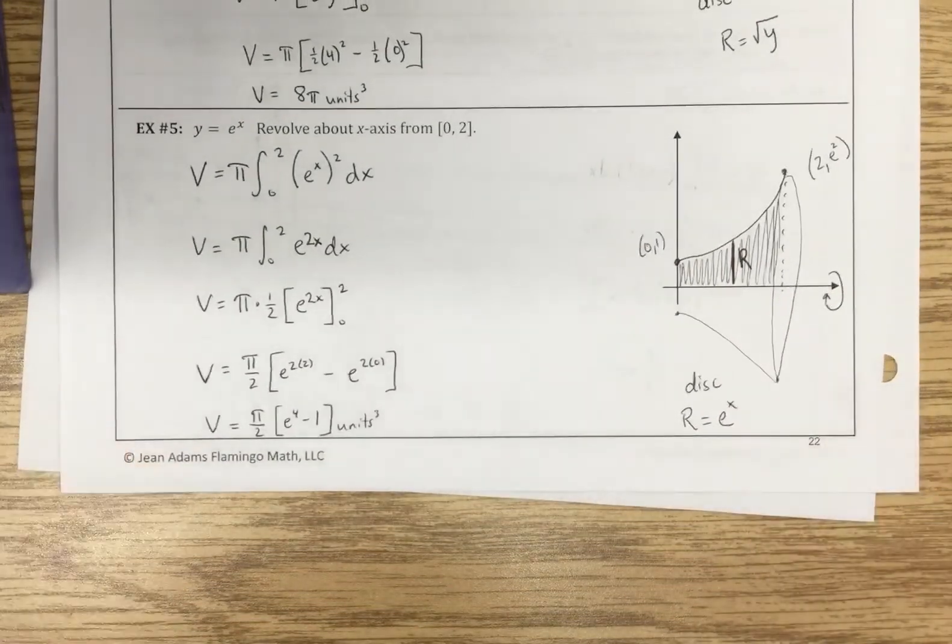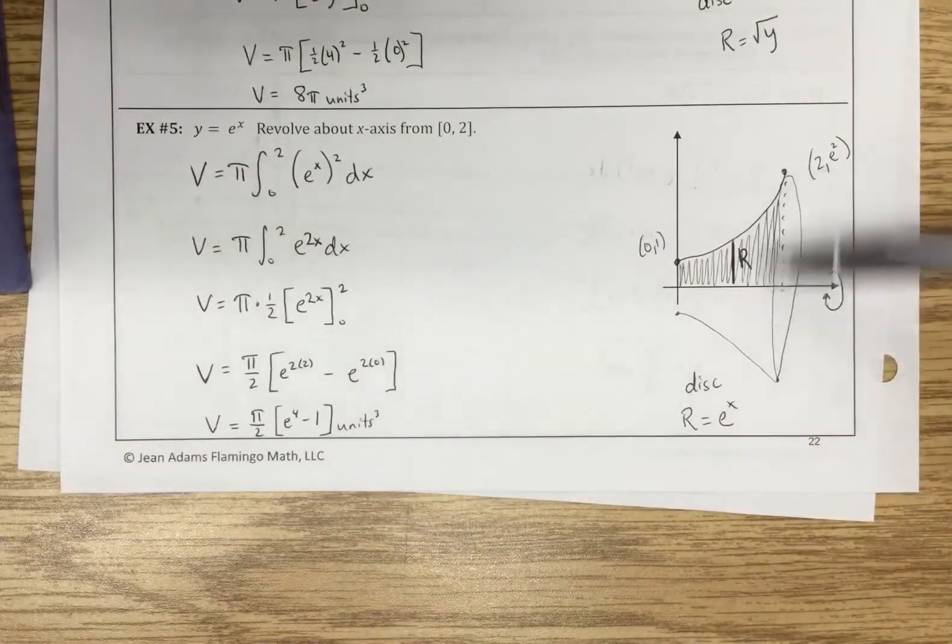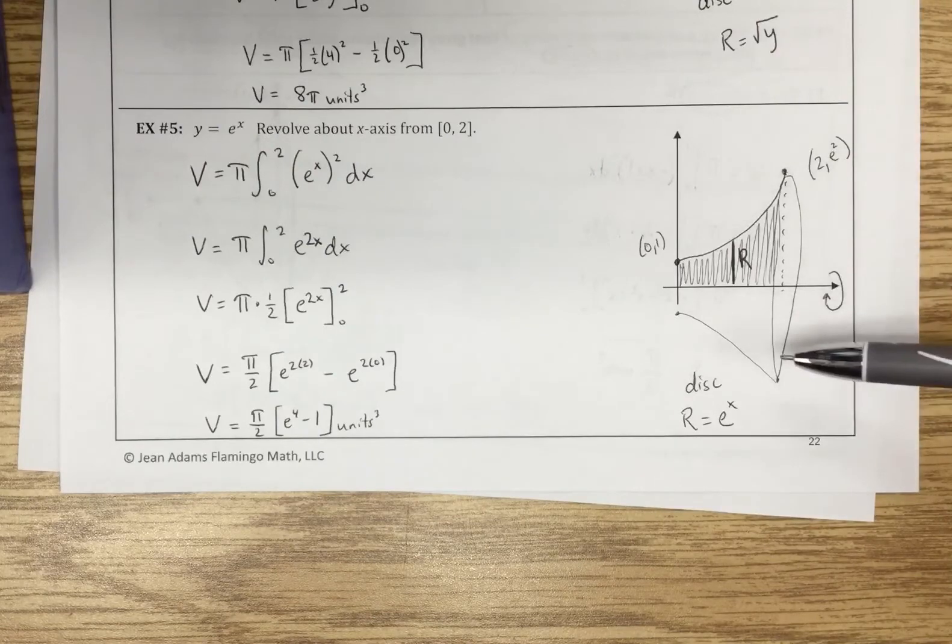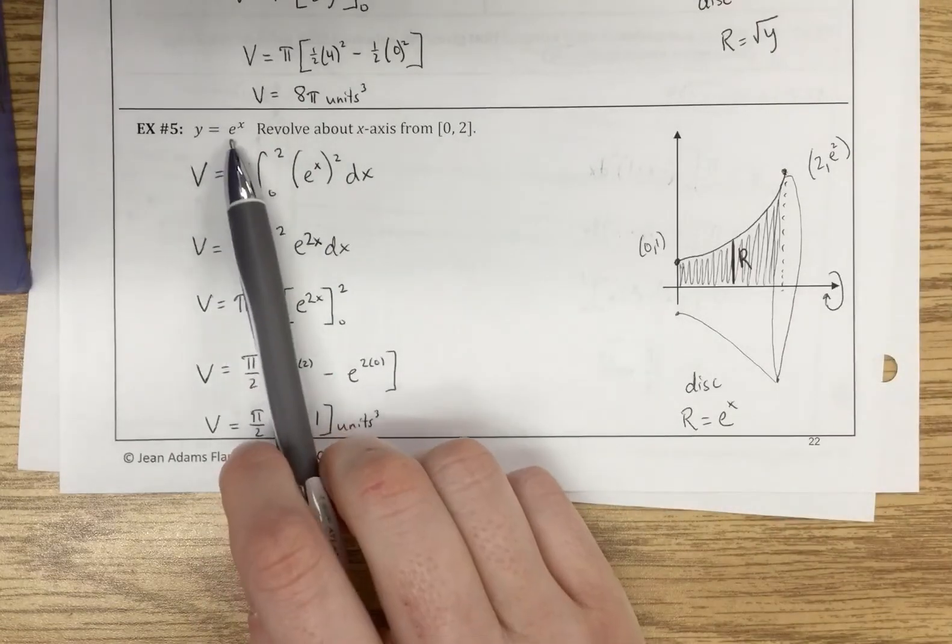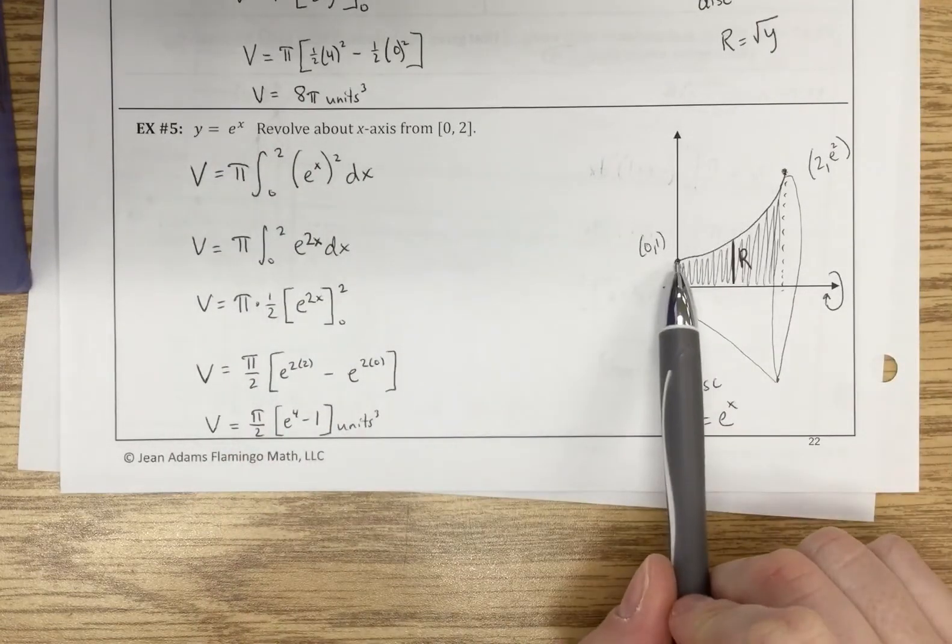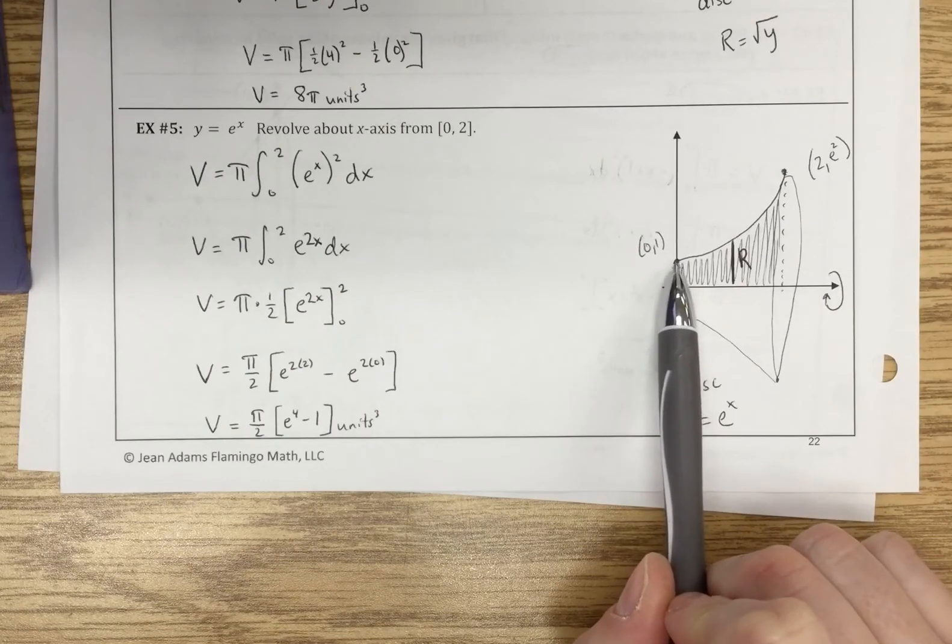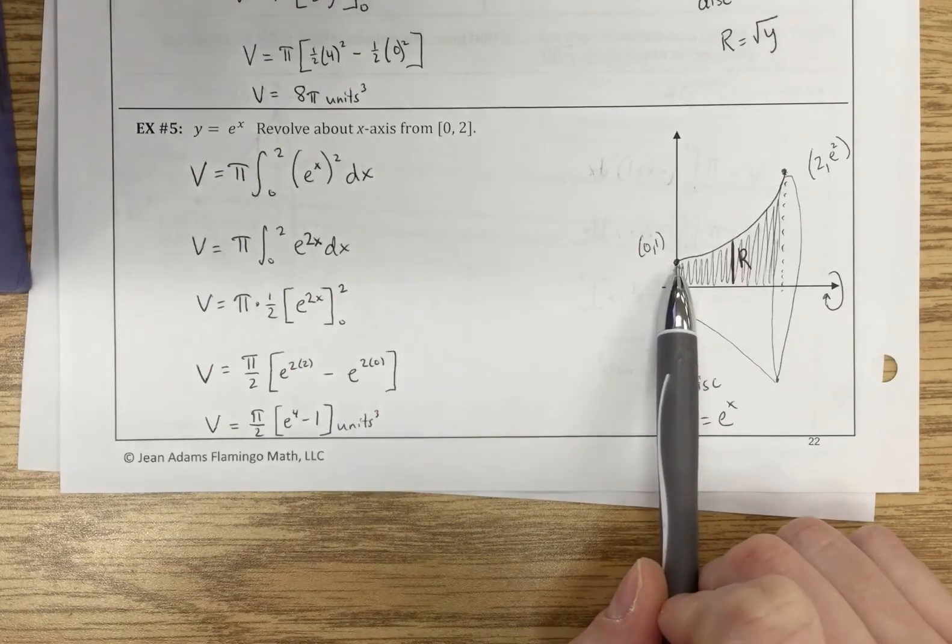In example 5, we end up with this fun sort of trumpet bell shape. I hope the e to the x didn't scare you. So when you're drawing the graph of it, (0,1) is a point that we all know is on any exponential graph.